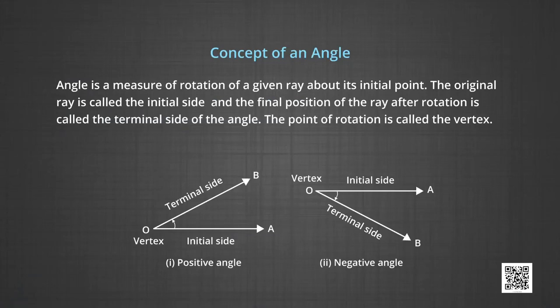In earlier classes, we have already studied the trigonometric ratios of acute angles as the ratio of the sides of a right angle triangle. Now we will generalize the concept of trigonometric ratios to trigonometric functions and study their properties. We will also study the relationship between L, theta, and R, where L is the length of an arc, R is the radius of the circle, and theta is the angle subtended by the arc at the centre of the circle.